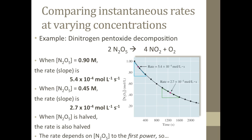At the second labeled point on the graph, when the concentration is halved to 0.45 molar, the slope of the tangent line at this point is 2.7 times 10 to the negative 4th power moles per liter per second. This is half the slope from the previous point, so whenever the concentration is halved, the rate is also halved.